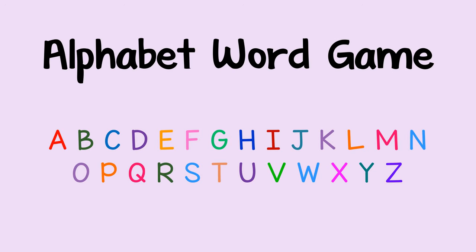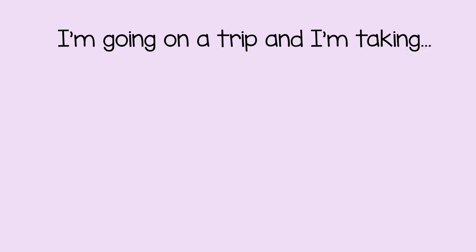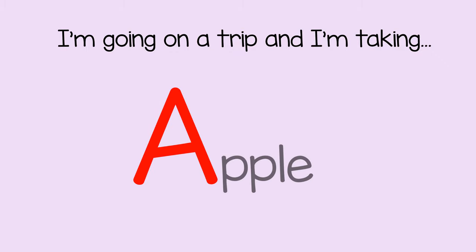You can help a child learn new words by playing an alphabet word game. You can start the game by saying, 'I'm going on a trip, and I'm taking,' and then naming something that starts with the letter A, like an apple.